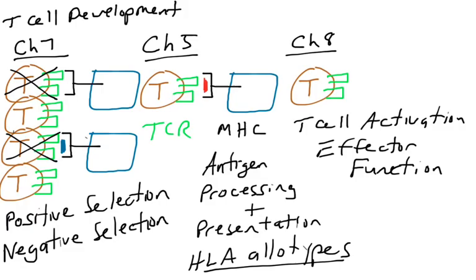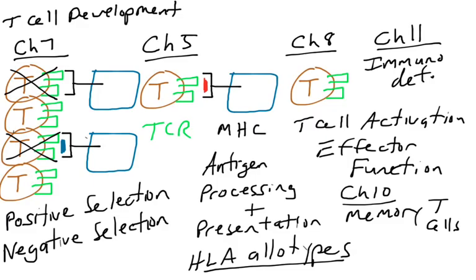In Chapter 8, we'll see how T cells wander the body, become activated, and once activated, how they turn on their effector functions — killing other cells or helping other cells. Chapter 10 will discuss memory T cells. Chapter 11 will talk about immunodeficiencies — what happens when T cells don't work. And that's going to be this unit.